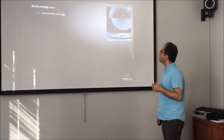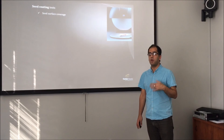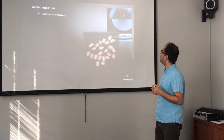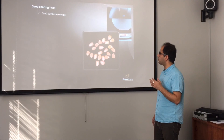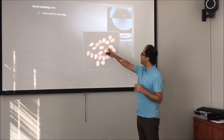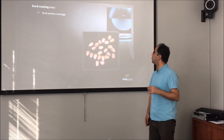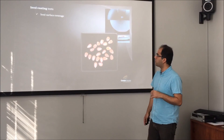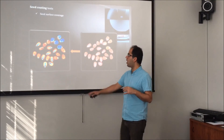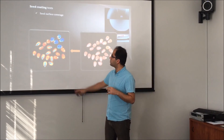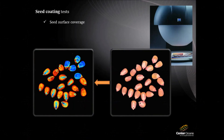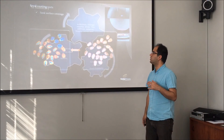Seed surface coverage is also important — whether the seed surface is fully and properly covered with the coating. We use a video meter for this. The video meter is a multi-spectral, multi-wavelength spectral analyzer that takes images of seeds at 19 different wavelengths. Some seeds are coated properly and some are not. The video meter can show how they are coated and give a numerical value for the coverage level of the seeds.